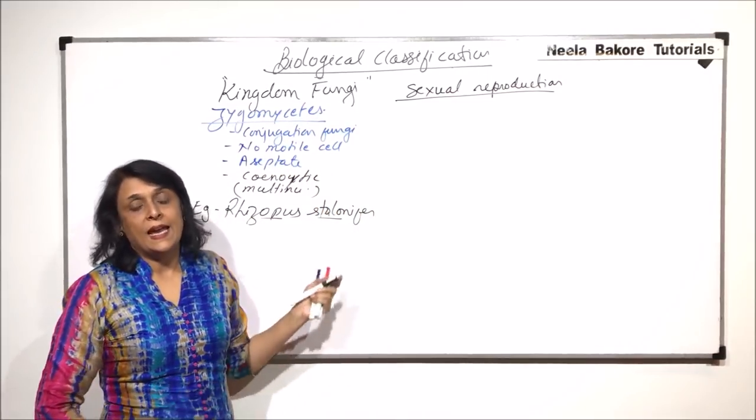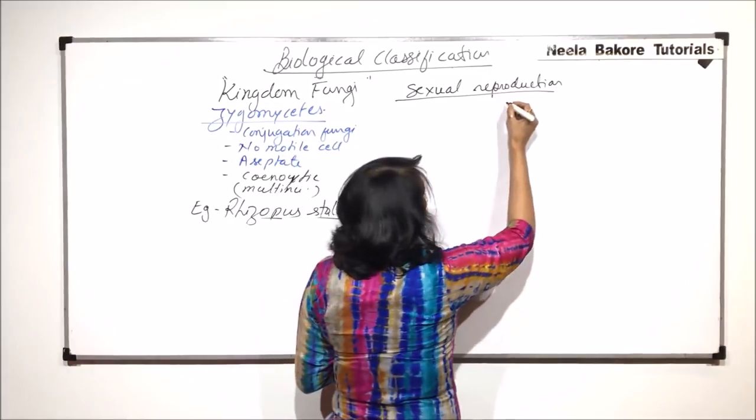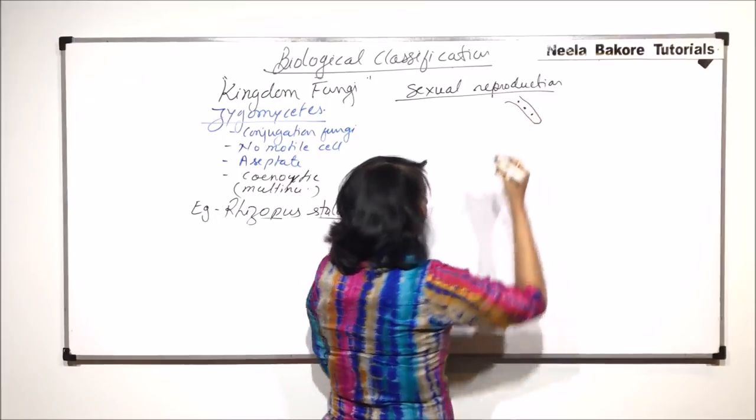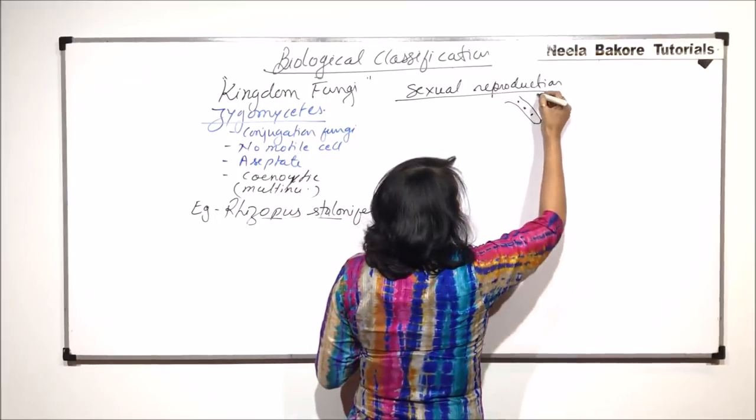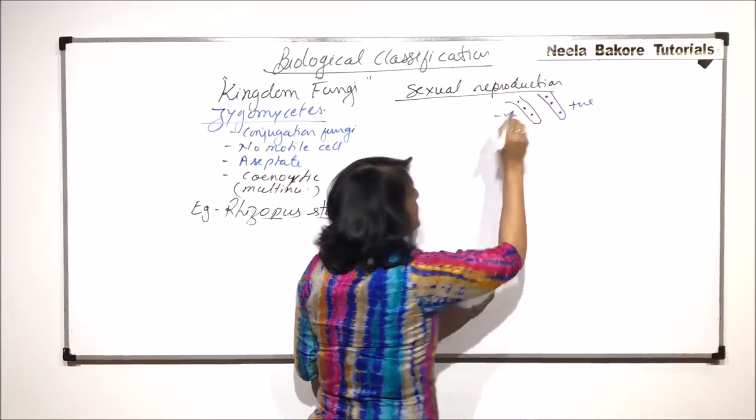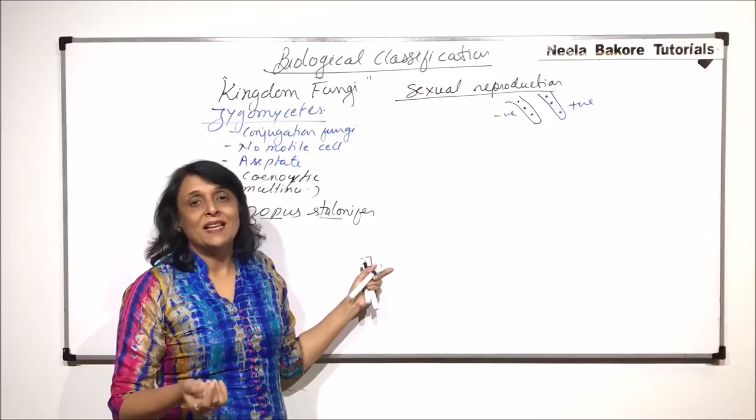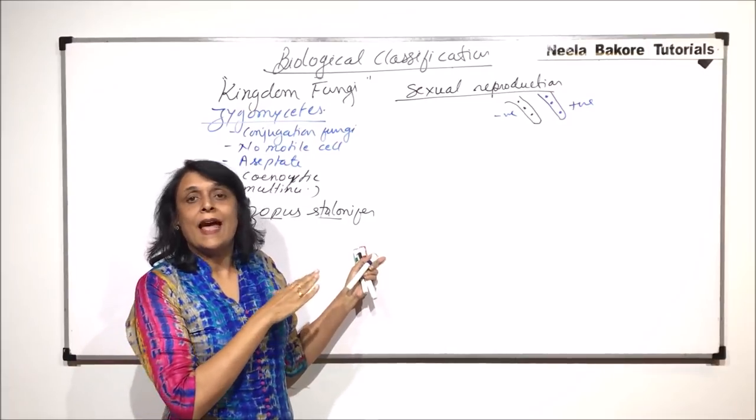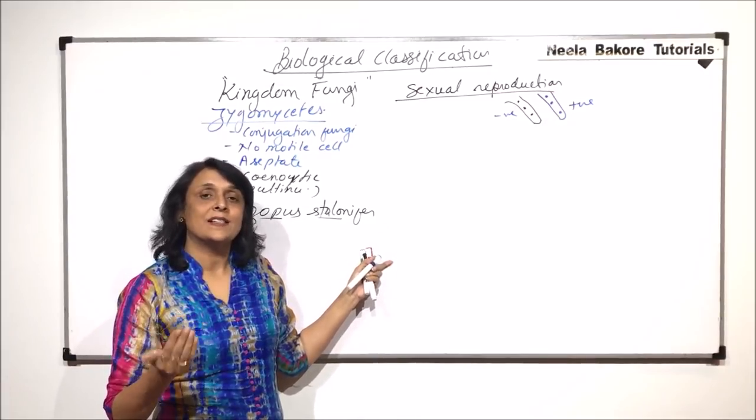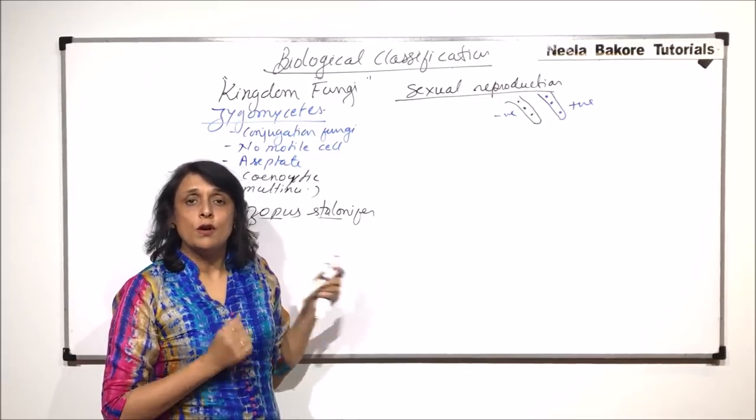We have already seen asexual reproduction by spore formation. Now, let us say these are two hyphae of opposite strain. If we are showing one with one color, let us use another color for the other hyphae. Say one is of positive strain, one is of negative strain. This basically means positive is equivalent to the male cell or male hyphae because here, at this level, there is no specialization as such. So one strain is considered as positive equivalent to male and other strain is considered negative equivalent to female.